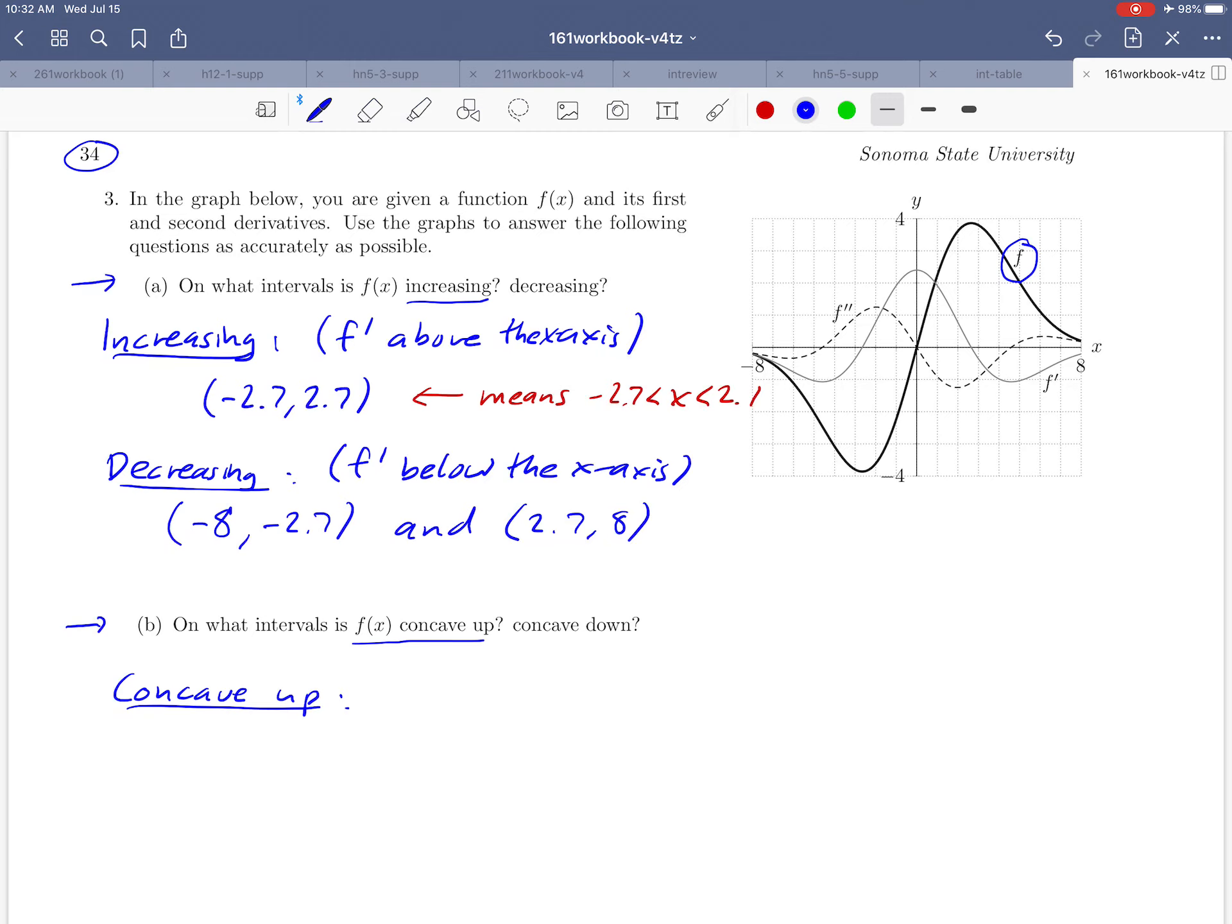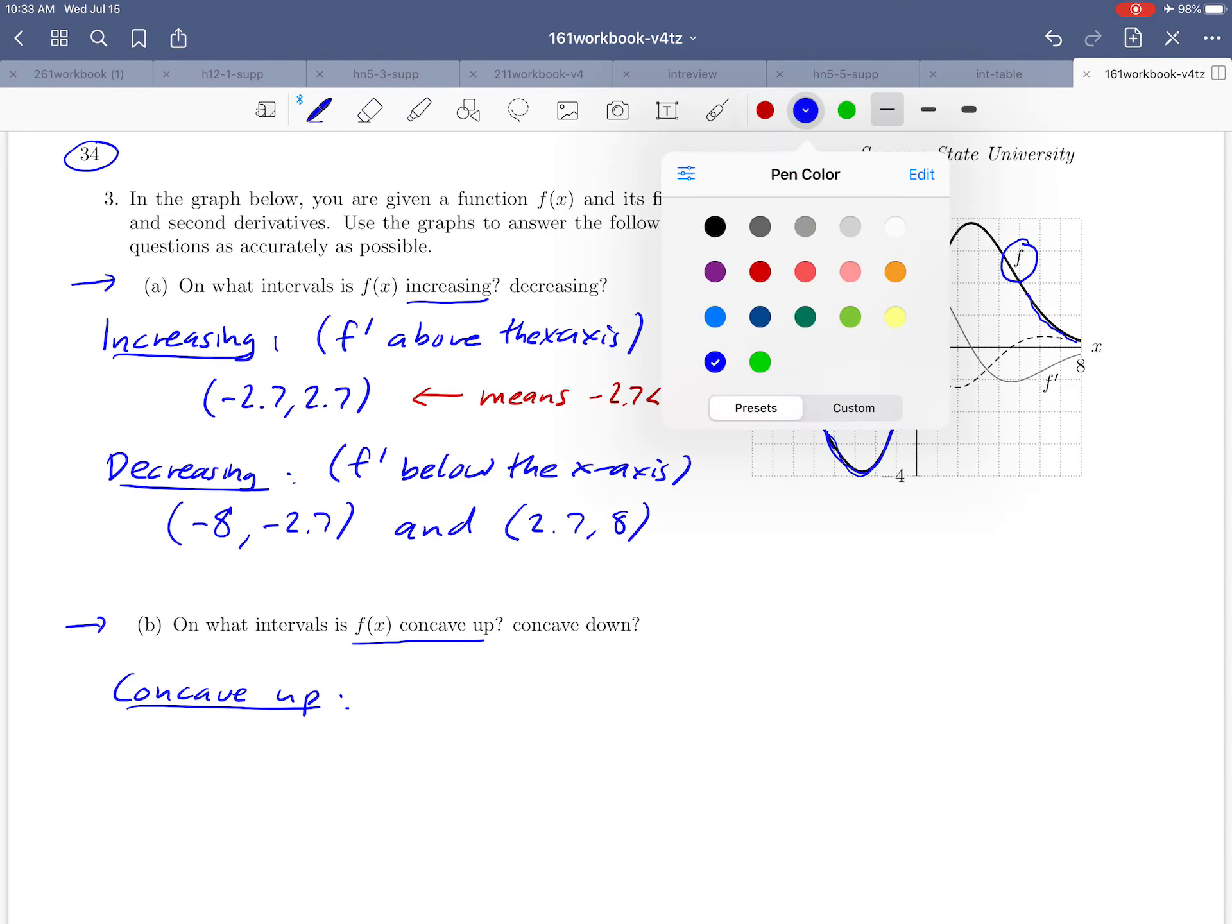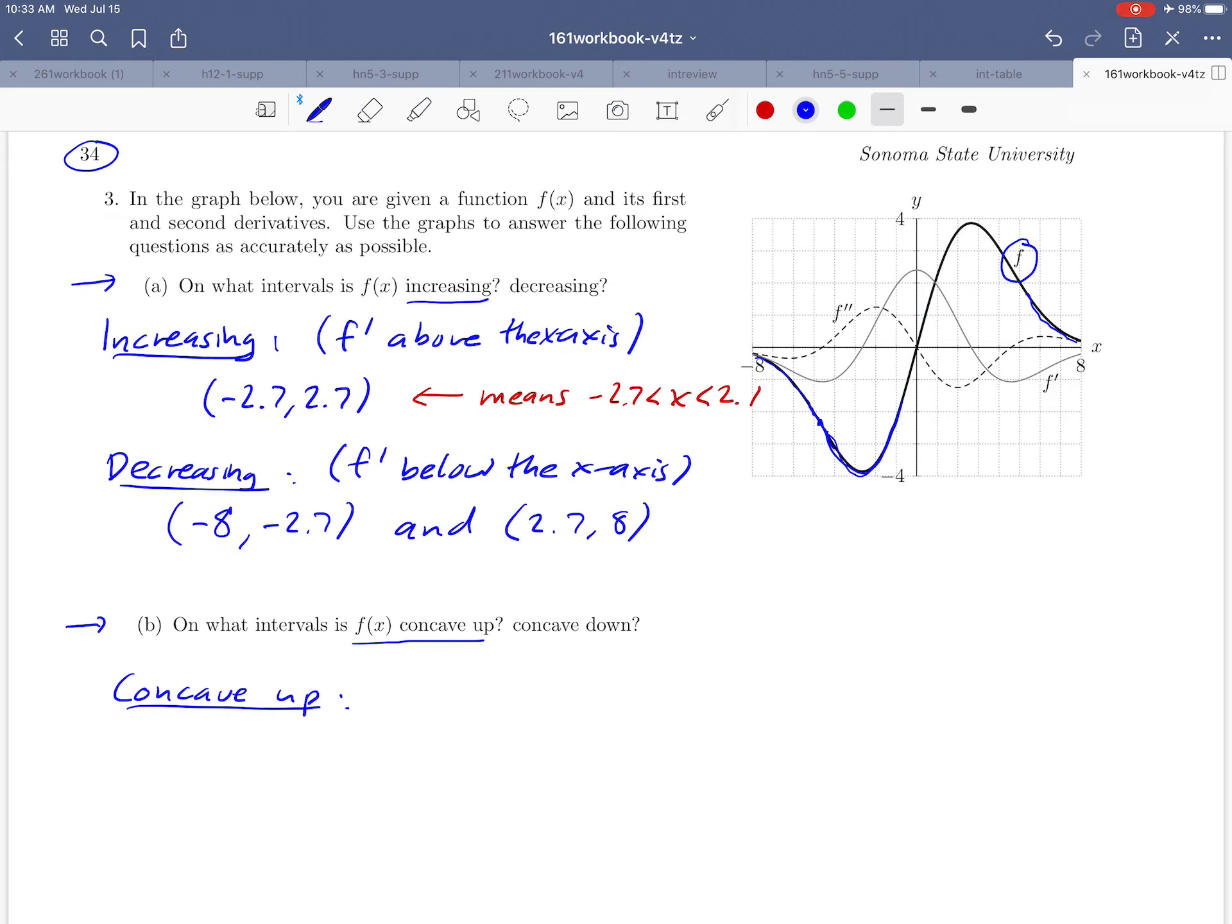And you can see portions of the graph that sort of have that shape maybe around this part of the graph maybe a little bit over here, but it's not so easy to determine where is the cutoff point. In other words where does it stop looking like a right side up bowl and start looking like an upside down bowl. That's not something I can do exactly graphically very well. So here it's really helpful to remember that concavity, another way to think about concavity is to think about the second derivative.